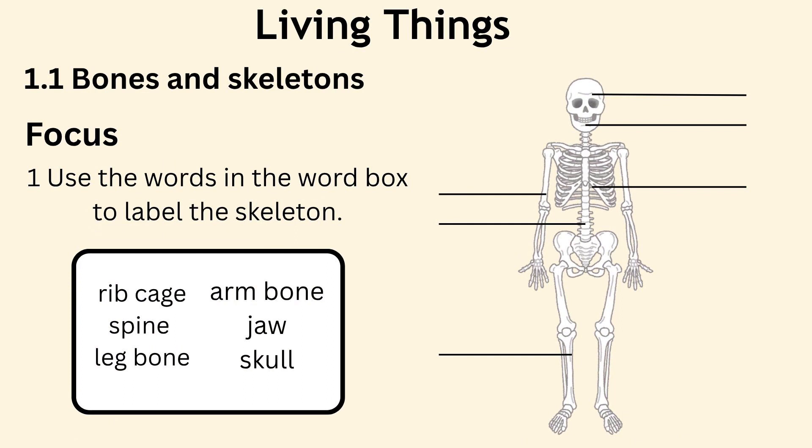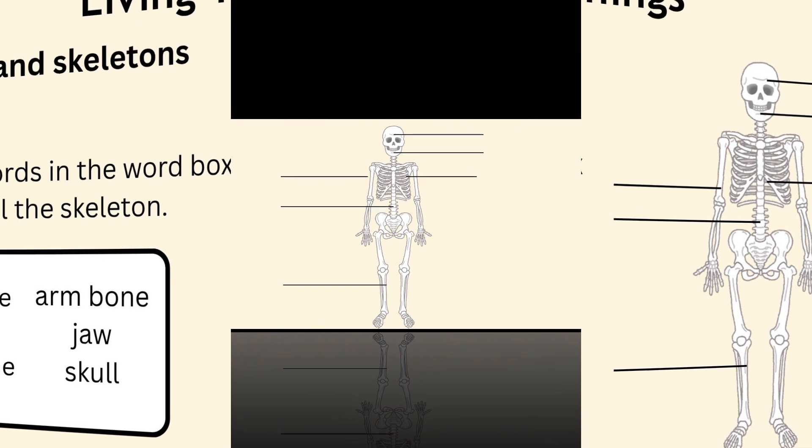Question number 1. Use the words in the word box to label the skeleton. Let's read together: rib cage, spine, leg bone, arm bone, jaw, and skull. Ok everybody, let's see the skeleton.